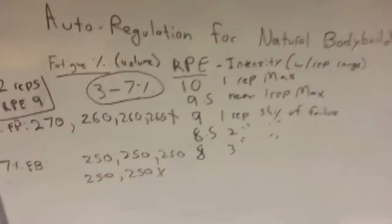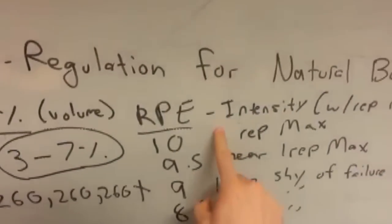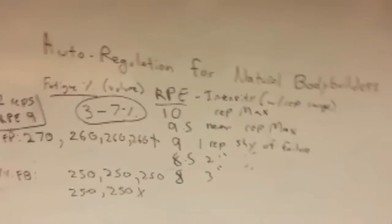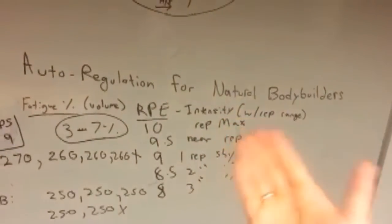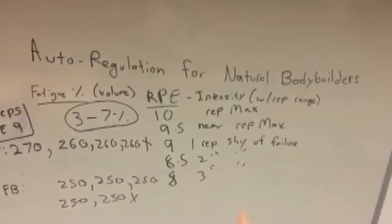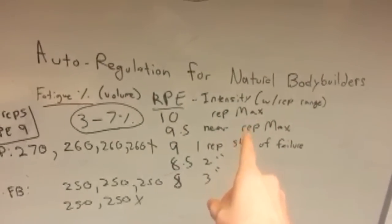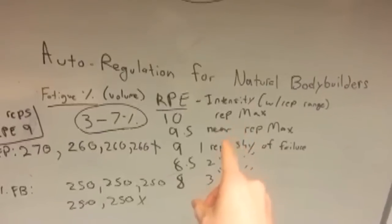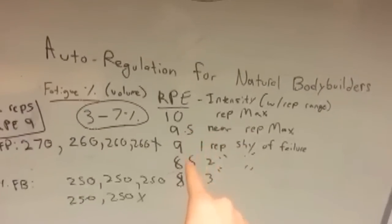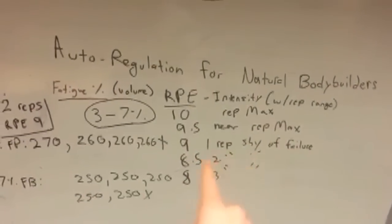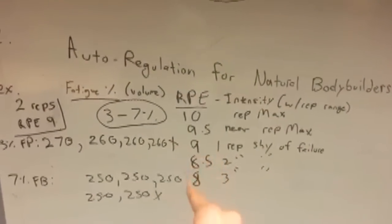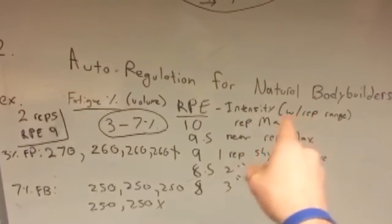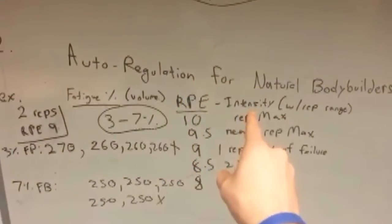A 10 on the RPE scale is your max — not necessarily your one rep max, just a rep max. So if that was your five rep max and you went to five, that would be a 10. If you used slightly less weight — say your one rep max was 460 and you did a 450 squat and knew you had 10 more pounds but couldn't do a second rep — that would be nine and a half. Nine is one rep shy of failure, eight and a half is two reps shy, eight is three reps shy. So with a rep range, RPE determines intensity.